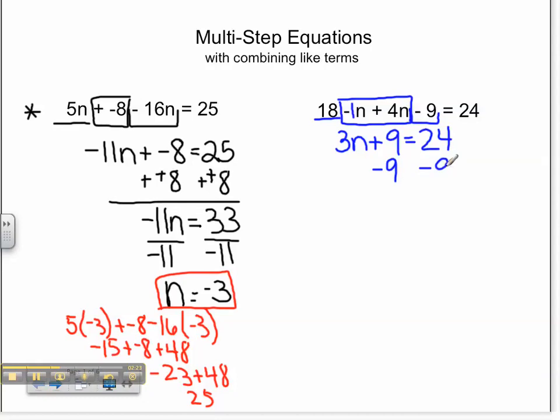We're going to subtract 9 on both sides of the equal sign, which makes our equation 3n equals 15. We will then divide both sides by 3, leaving us with n equals 5.